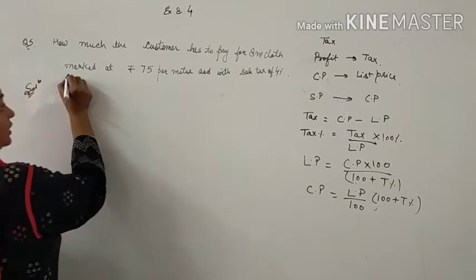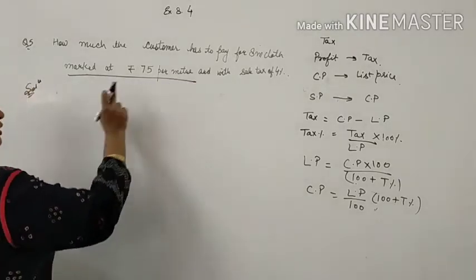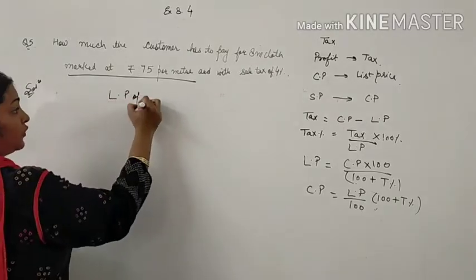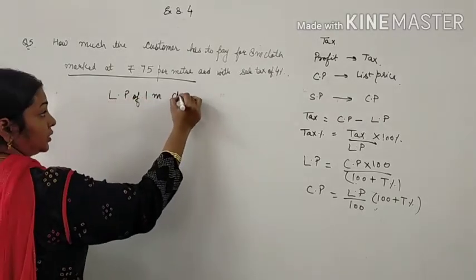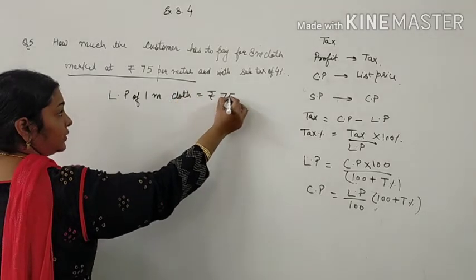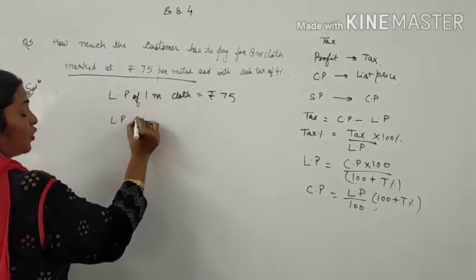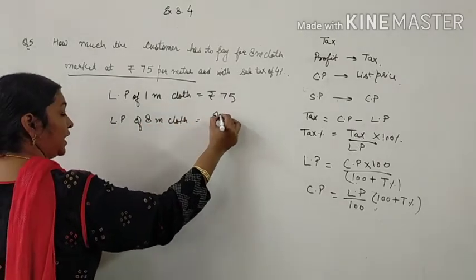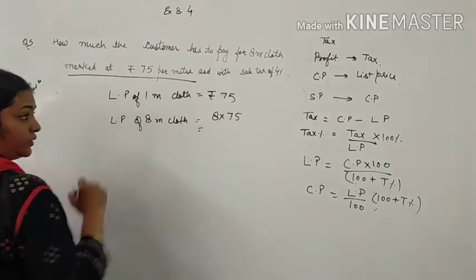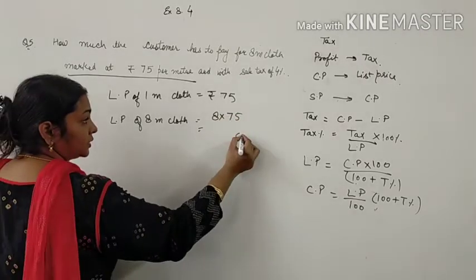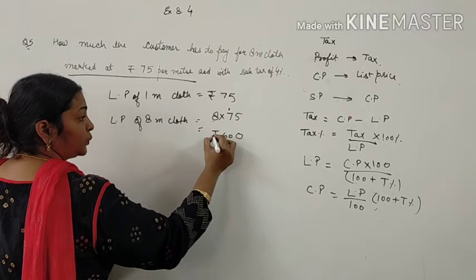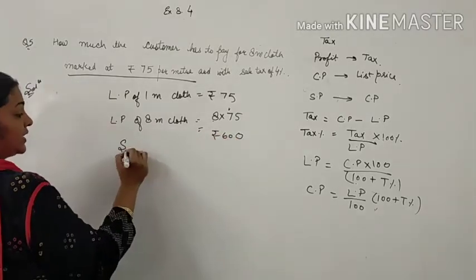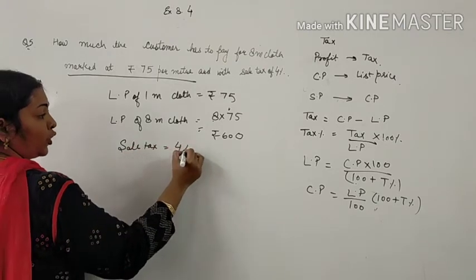First of all, it is given that the rate of the cloth is Rs. 75 per liter. That makes list price of 1 liter cloth Rs. 75. List price of 8 liter cloth will be equal to 8 into 75. Do the multiplication. It will be Rs. 600. This is your list price.